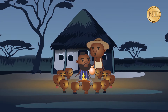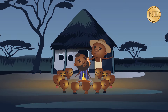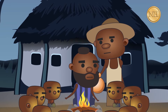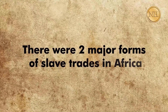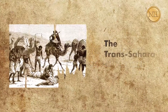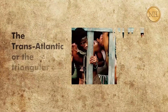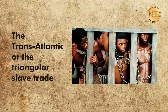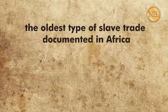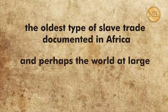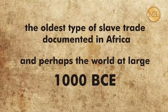You might be wondering — aren't the Europeans the ones who arrived at the shores of Africa and took loads of slaves away on their ships? There were two major forms of slave trades in Africa. The first was the Trans-Sahara slave trade; the second is the Trans-Atlantic or the Triangular slave trade. The Trans-Sahara slave trade is by far the oldest type of slave trade documented in Africa, and perhaps the world at large. It dates as far back as 1000 BCE.